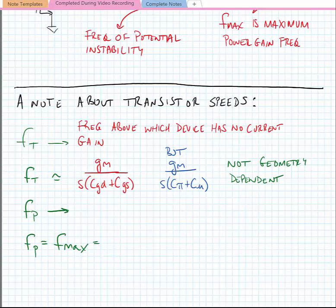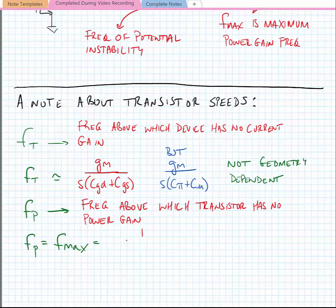Now F_max is the frequency above which the transistor has no power gain. F_max for our device is more or less equal to 1 over 4 pi times RGS times CGS. And this is layout dependent. There is no ratio that cancels here. And we should note that for a bipolar device, RGS would be the equivalent of R pi, and CGS would be the equivalent of C pi.